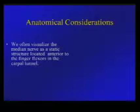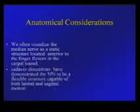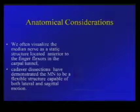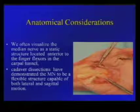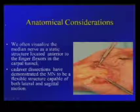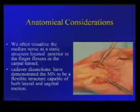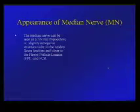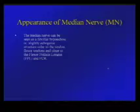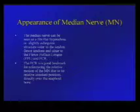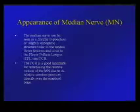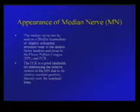We often visualize the median nerve as a static structure anterior to the flexor tendons in the carpal tunnel. However, cadaver dissections we have done have demonstrated that the median nerve is a very flexible structure, capable of both lateral and sagittal motion within the carpal tunnel. The median nerve on ultrasound has a fibrillar, hypoechoic, or slightly echogenic structure, volar to the flexor tendons, at the ulnar aspect of the flexor pollicis longus and the flexor carpi radialis — a good ultrasound landmark due to its relatively constant position relative to the scaphoid bone.